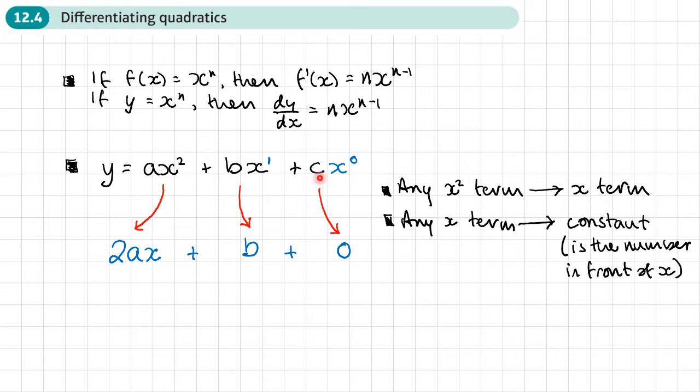And that constant is the number in front of x. In other words, the coefficient of x. And then what happened to any constants here? Well, they just disappear. They just became zero. So any constants, any numbers that are floating around on their own, they just disappear, don't they?